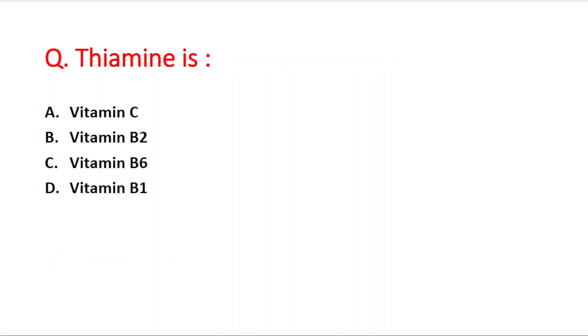Next question: thiamine is — option A vitamin C, B vitamin B2, C vitamin B6, D vitamin B1. Thiamine is the chemical name of vitamin B1. Riboflavin is the chemical name of vitamin B2.